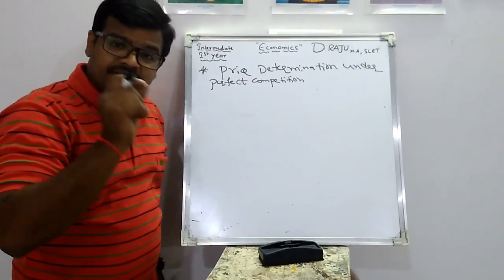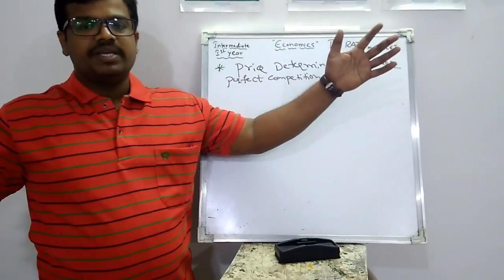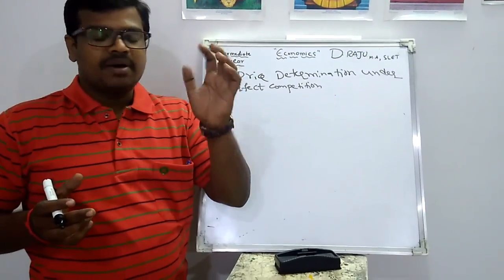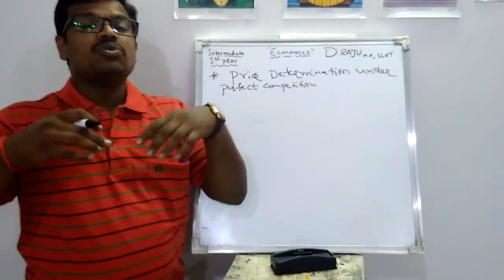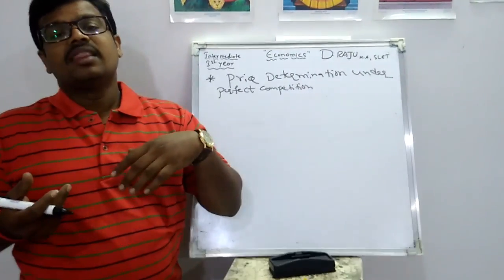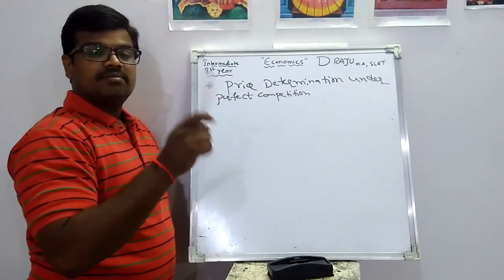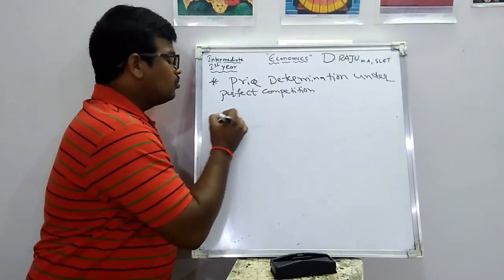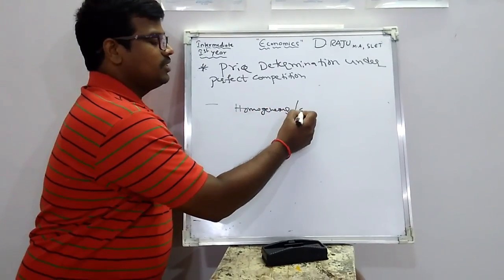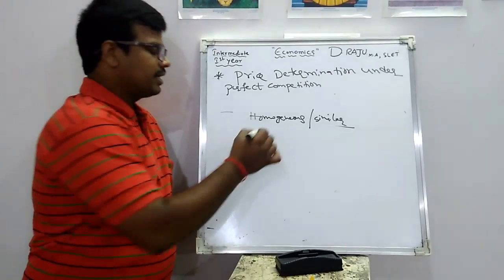In the perfect competition market, there exist a large number of buyers and a large number of sellers. That means goods produced by a large number of producers are purchased by a large number of buyers. The goods are homogeneous — that means goods are similar goods produced under the perfect competition market.